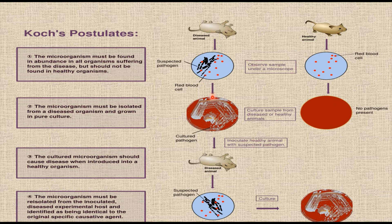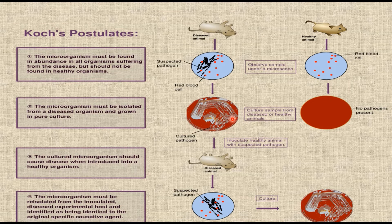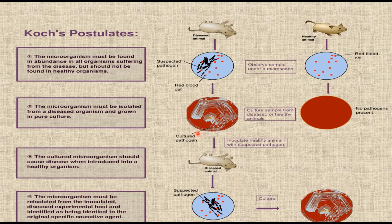Koch tried to grow these bacilli in various broth cultures and finally succeeded in culturing and isolating them in culture media. He then took this culture and injected it into healthy mice, which again died. This confirmed that the bacilli were responsible for causing the disease.